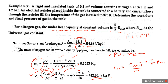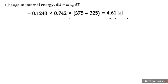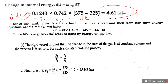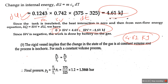The electric work is done on the system. The change in internal energy is m·cv·ΔT, and since the tank is insulated dQ = 0, the work done equals the change in internal energy. The work done is approximately 4.61 kJ. For final pressure, since the rigid vessel gives an isochoric process, we use p1/T1 = p2/T2. With T1 = 325 K, T2 = 375 K, and p1 = 1.2 bar, we can calculate p2.